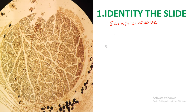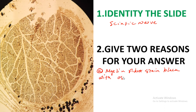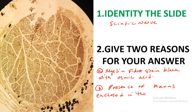Give two reasons for your answer. The first reason is the myelin fibers stained black with osmic acid — remember, osmic acid is used to identify the myelin fibers in nerves. The second reason is the presence of axons which are enclosed in the neurilemma sheath.